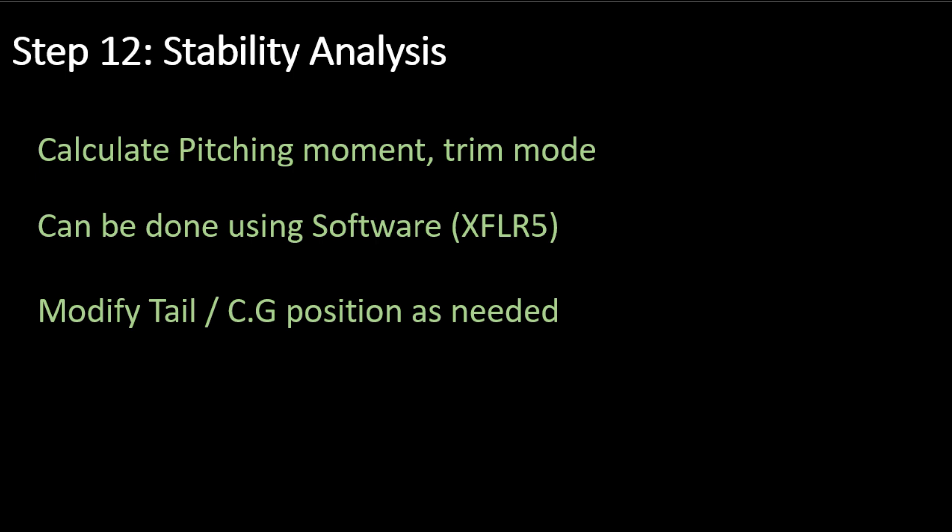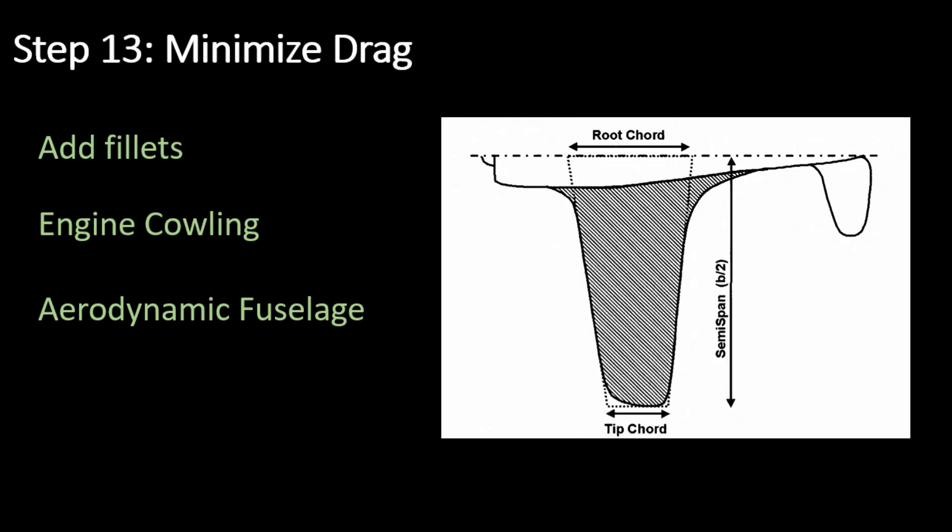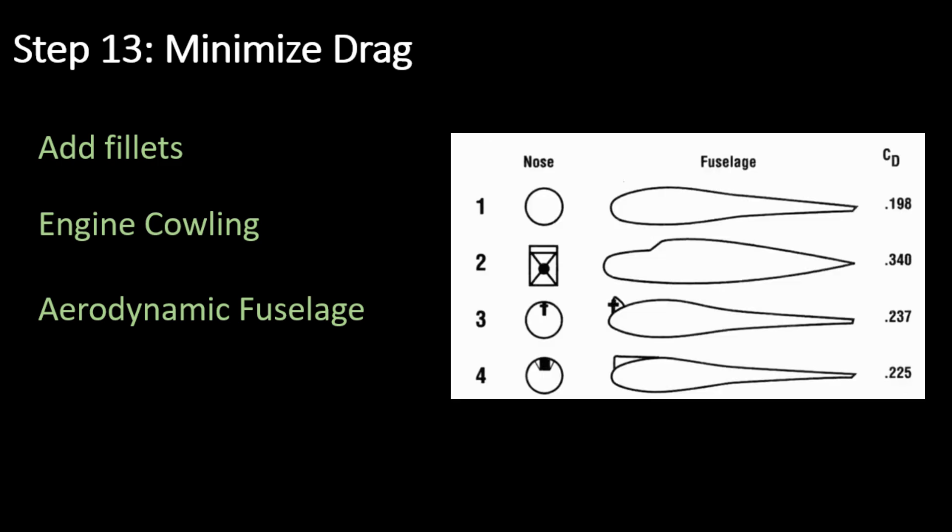Step 12: Perform stability analysis. In this step, you may need to make changes to your tail or to the positioning of your CG to ensure the airplane is stable. Step 13: Modify your design for minimizing drag — add fillets and make the fuselage more aerodynamic, or add taper for better lift distribution.